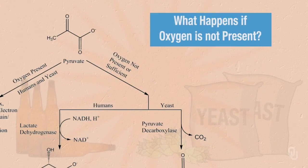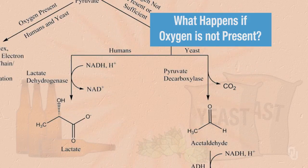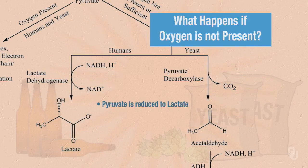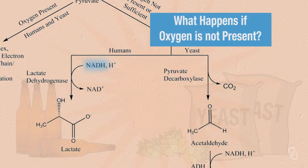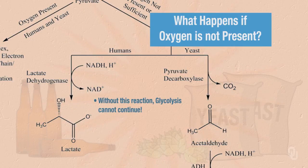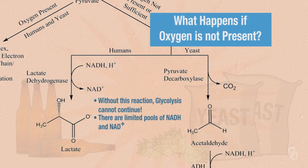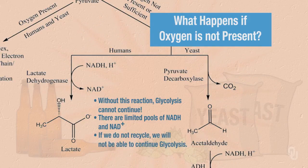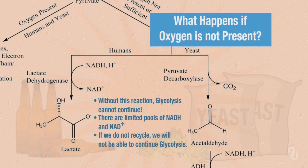When oxygen is not present or not sufficient, in humans the pyruvate undergoes a reaction catalyzed by the enzyme lactate dehydrogenase, which converts pyruvate into lactate. Specifically, pyruvate is reduced to lactate, so NADH must be oxidized back to NAD+. This is critical because unless NADH is recycled back to NAD+, glycolysis cannot continue — there are limited pools of NADH and NAD+, and glycolysis consumes NAD+.